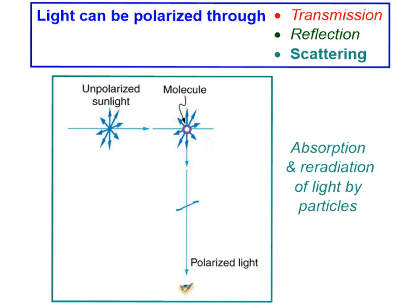One final way that light can be polarized is through scattering. Scattering is a process of absorption and re-radiation of light by particles. Light in our atmosphere — the sunlight — ends up being polarized in this way. We have unpolarized sunlight coming in, and it hits different molecules in the atmosphere. When an unpolarized beam of sunlight strikes an air molecule, the electrons in that molecule begin vibrating in the same plane as the electric field of the incoming wave. They then re-radiate that light, and it's polarized in the direction of those electron oscillations. So the component of polarized light parallel to the Earth's surface is also polarized.